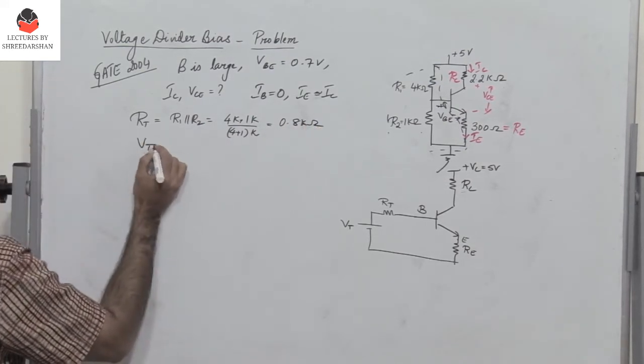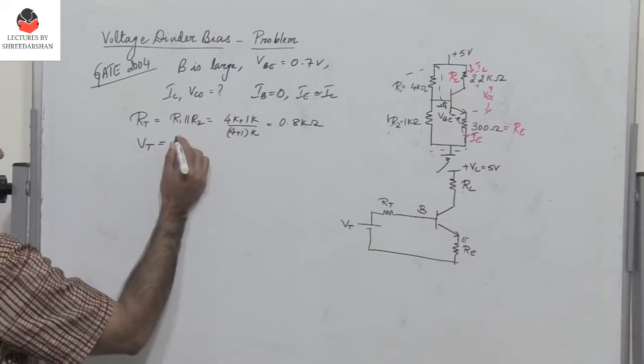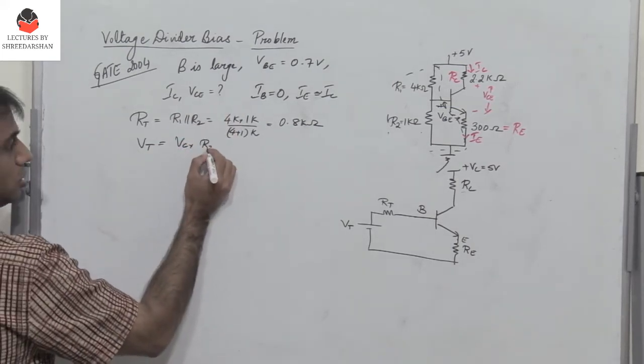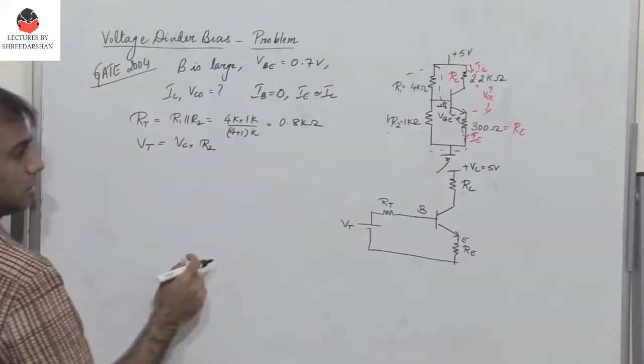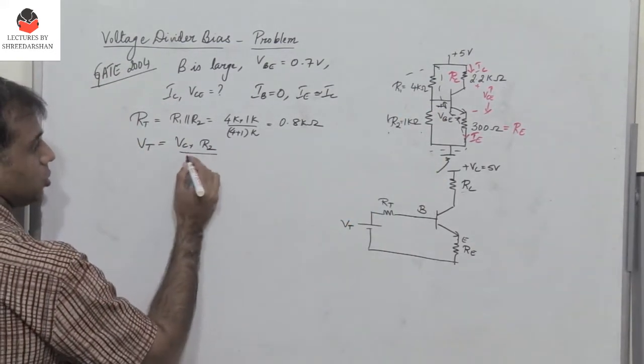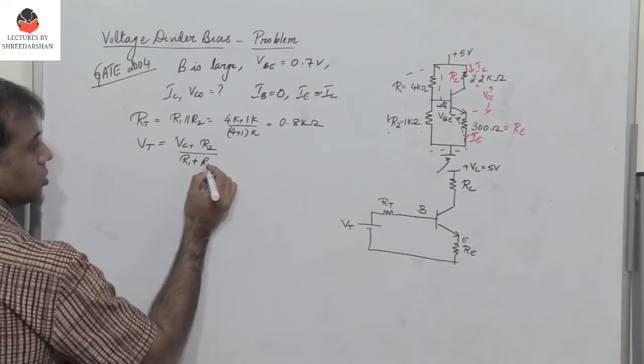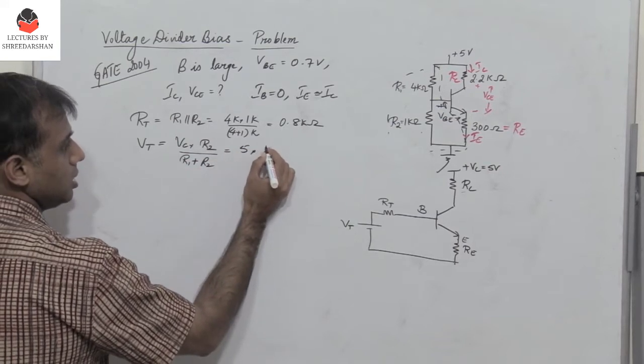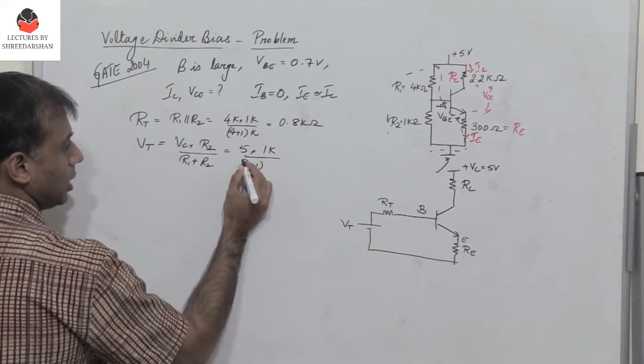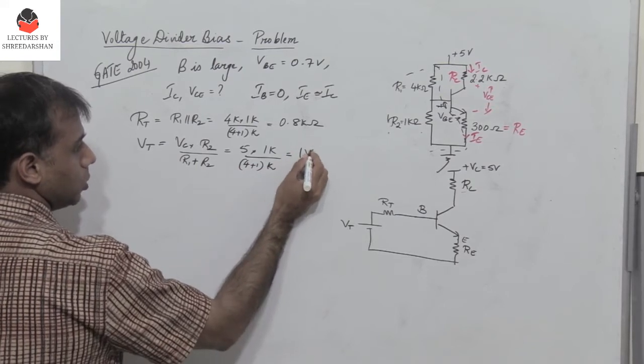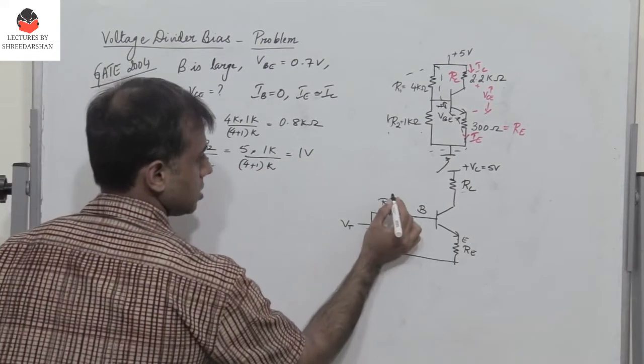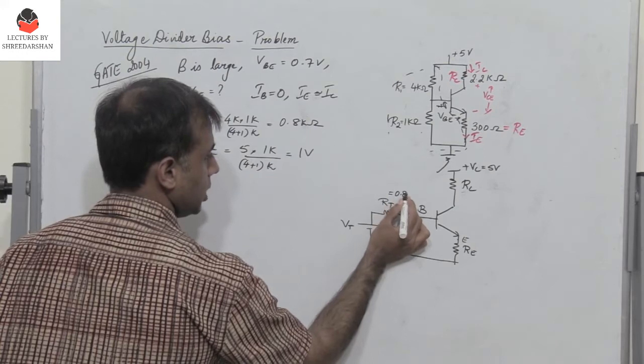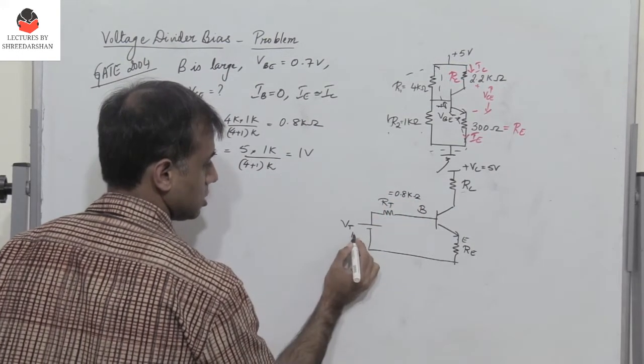And the Thevenin's voltage is the voltage Vc into the resistance across the base and emitter, which is R2 divided by R1 plus R2. So we have 5 into 1k divided by 4 plus 1k, so I get 1 volt. This equals 0.8 kilo ohms and this is 1 volt.